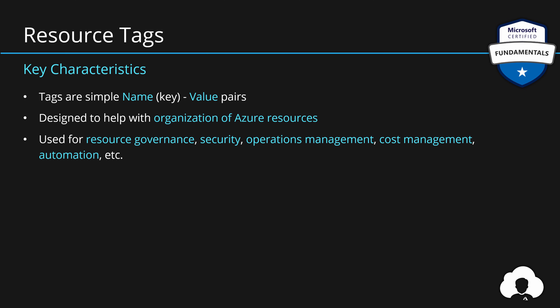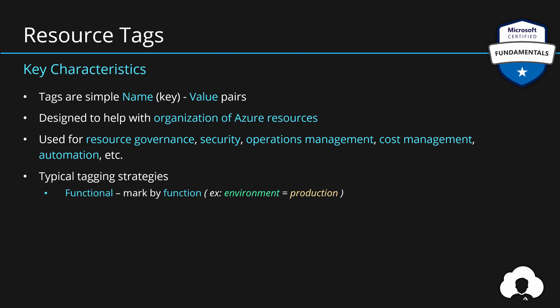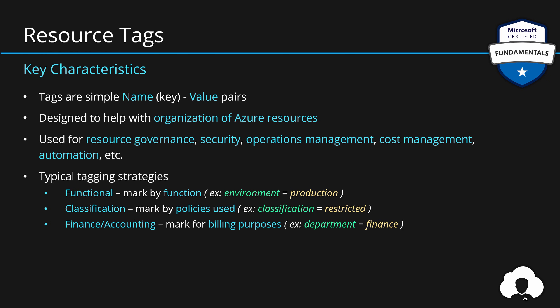There are also many tagging strategies typically used by organizations. For example, you can tag your Azure resources by their function by assigning a tag called 'environment' with a value like 'development', 'test', 'QA', or 'production'. Or you can use tags for classification — what kind of policies should be applied to those specific resources. If you are building an application that processes restricted data, you can use tags to mark those resources so it's easier to manage and apply policies and security strategies. Marking Azure resources by their billing purpose is also very common practice — assigning specific departments or cost centers and then charging them internally based on how much cost their applications generate.